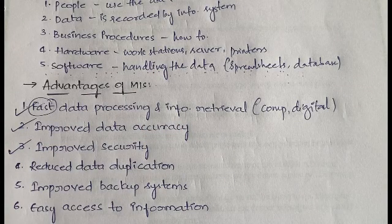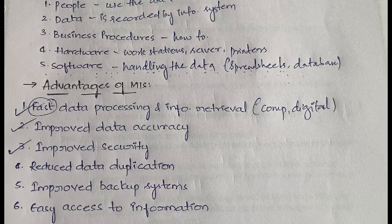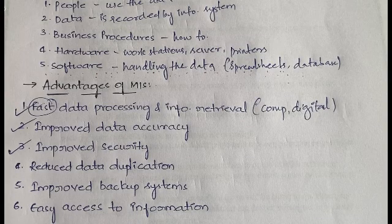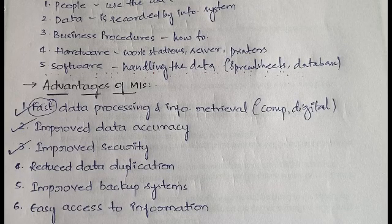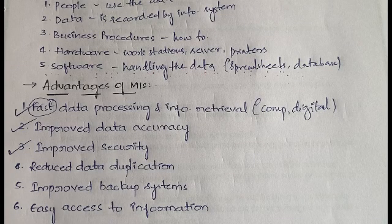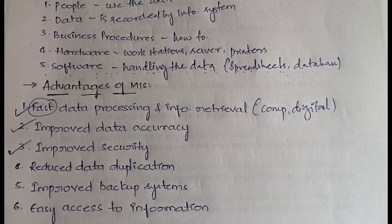The third advantage is improved security. In traditional bookkeeping, records are written manually and kept in a shelf or locker, where someone else could access them. In computerized or digital record keeping, no one else can access your data without your login credentials and password, which is what improved security means.